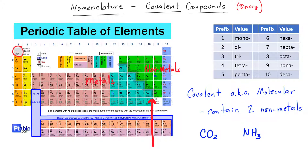Examples of covalent compounds include CO2 and NH3, where carbon and oxygen are both to the right of this staircase-looking line. To name molecular compounds, we're going to use a table of prefixes.